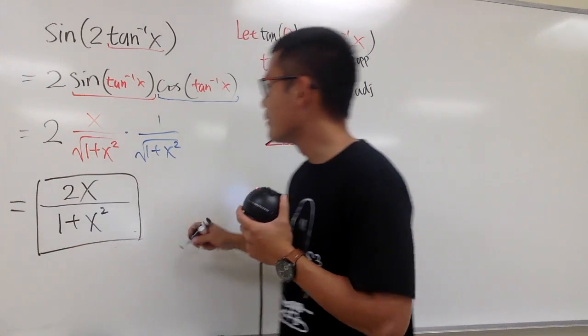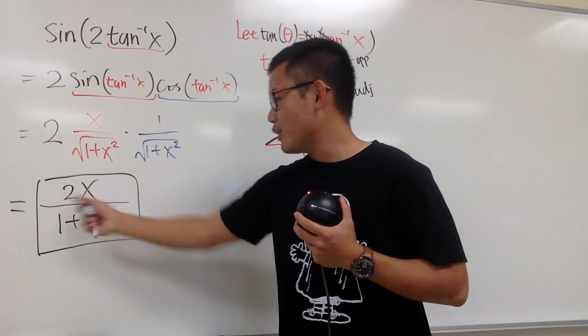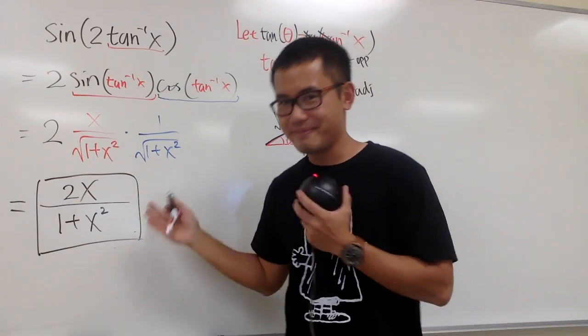So sin(2 tan⁻¹x) is nothing but just 2x over (1 + x²). That's it.